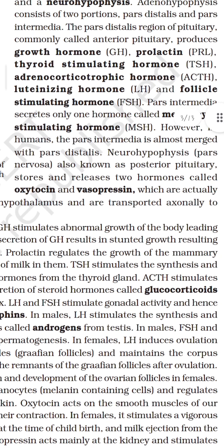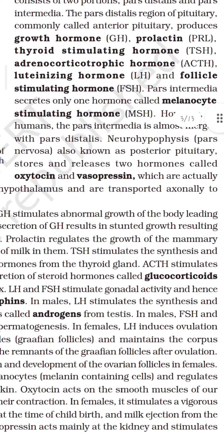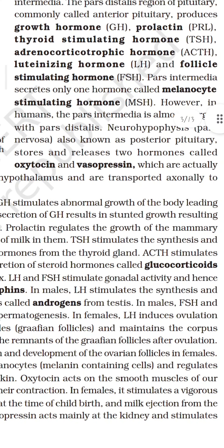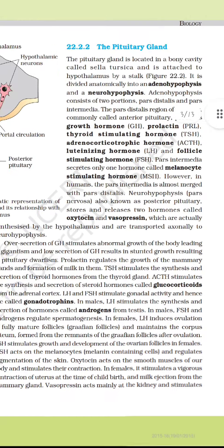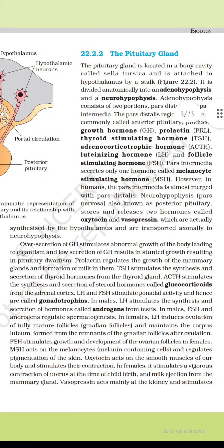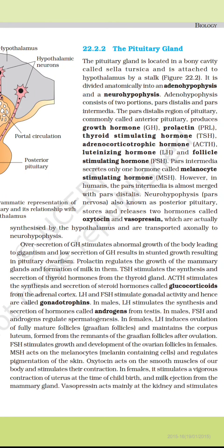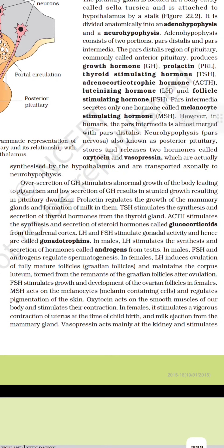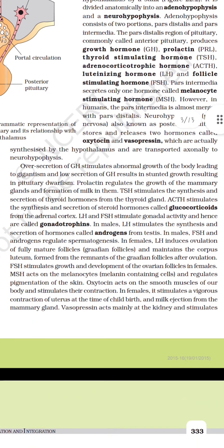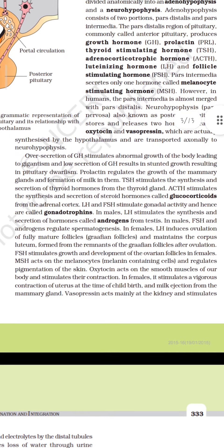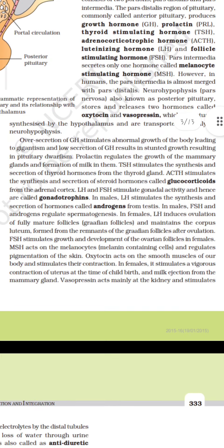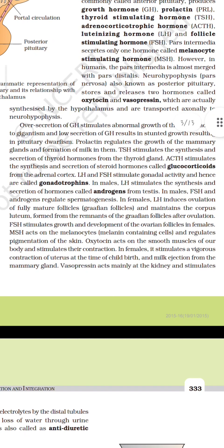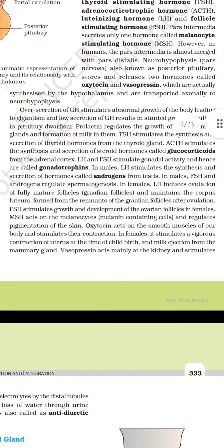The neurohypophysis, i.e. pars nervosa, also known as the posterior pituitary, stores and releases two hormones called oxytocin and vasopressin, which are actually synthesized by the hypothalamus and transported axonally to the neurohypophysis. Over-secretion of growth hormone stimulates abnormal growth of the body leading to gigantism, while lower secretion of growth hormone results in stunted growth causing pituitary dwarfism. Prolactin regulates the growth of mammary glands and formation of milk in them. Thyroid stimulating hormone stimulates the synthesis and secretion of thyroid hormones from the thyroid gland.